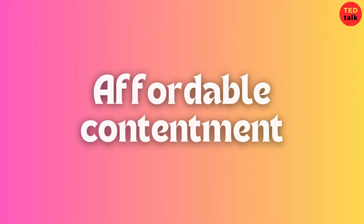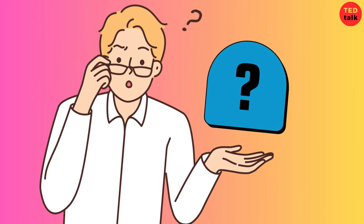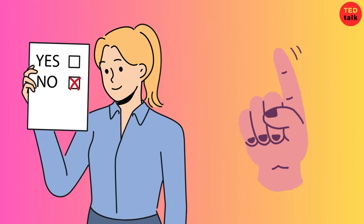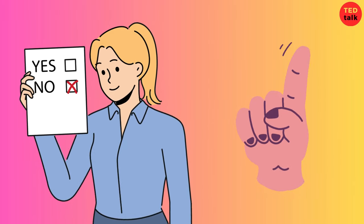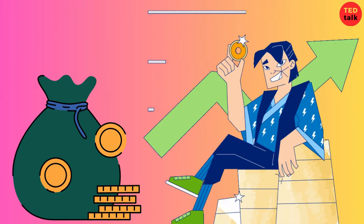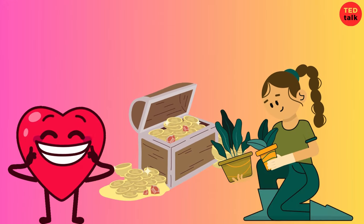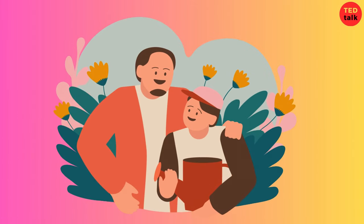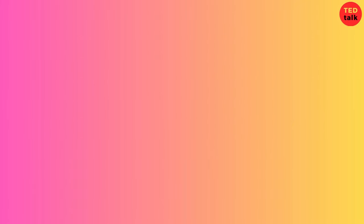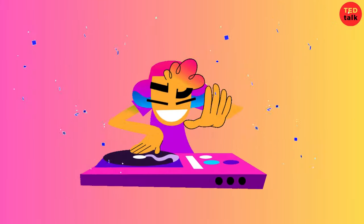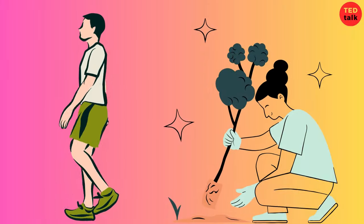Number three, affordable contentment. Did you know that being indifferent can actually lead to a more affordable and fulfilling life? When you're indifferent, you're not constantly chasing after the latest trends or trying to keep up with the Joneses. Instead, you're content with what you have and don't feel the need to constantly buy more stuff. It's like finding a treasure chest full of happiness right in your own backyard. This contentment with what you already have can save you a lot of money. You're not wasting your hard-earned cash on things you don't really need or even want. Instead, you're able to enjoy the simple pleasures in life, like spending time with loved ones or going for a walk in nature.